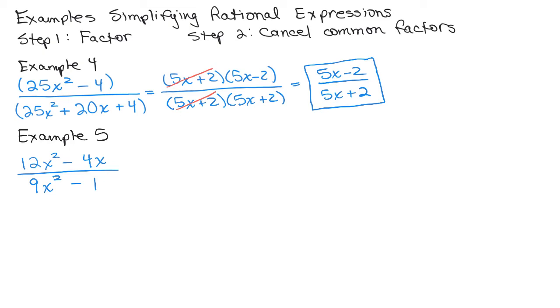Here's our fifth example. Once again, you can't cancel the 12 or the 9 or the X squares because that's an entire expression. So we need to factor each expression.